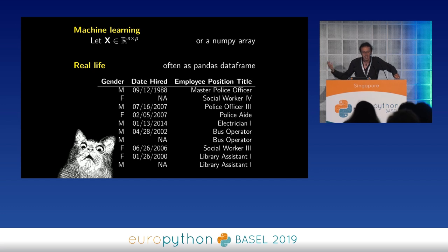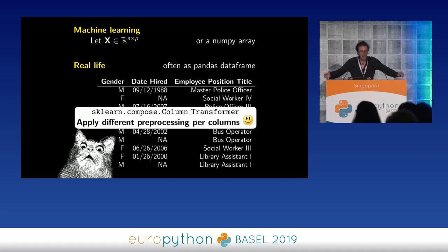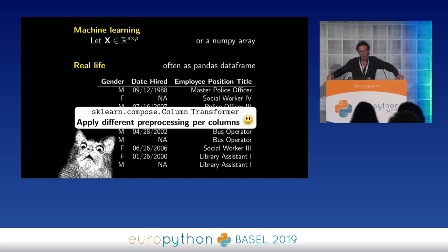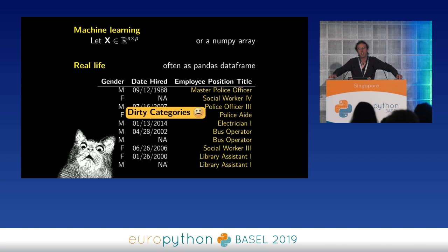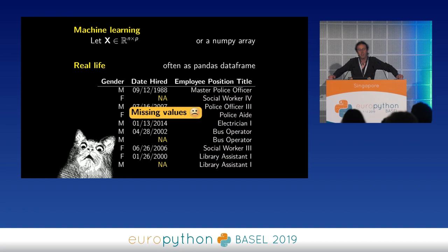In real life, data often comes as a pandas DataFrame, so it's not exactly a numerical matrix. We need to transform the different columns in different ways to cast this to a numerical array. We'll hit hard problems: one of these columns may not be a well-formatted categorical column, and another is that we might have missing values, which also raises problems.